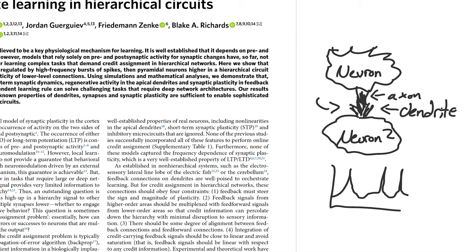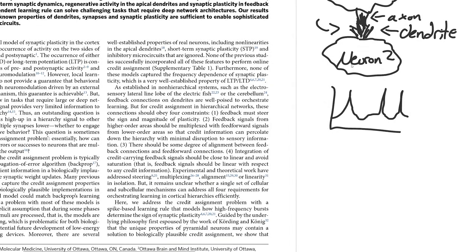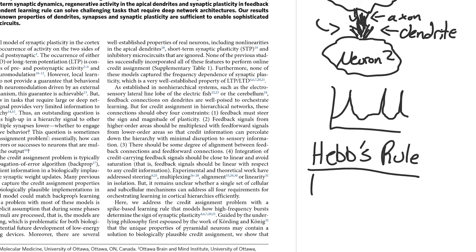Specifically, one of the rules we have is called Hebb's rule. It essentially states that when two neurons fire in tandem one after the other — if we have neuron one send out a spike and then the next neuron right after it spikes — that is going to cause this synapse to strengthen. So that's essentially what Hebb's rule states: learning via plasticity.